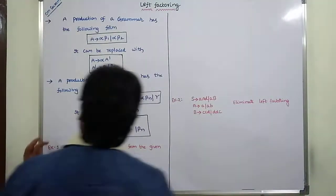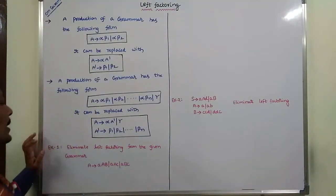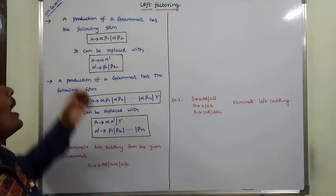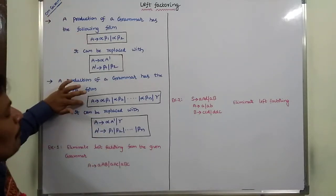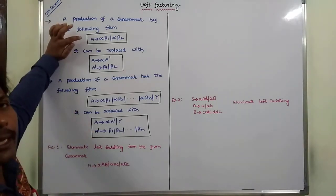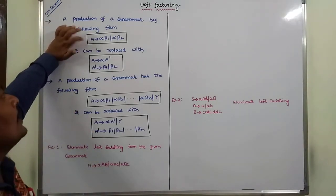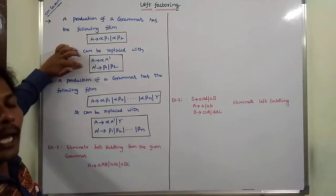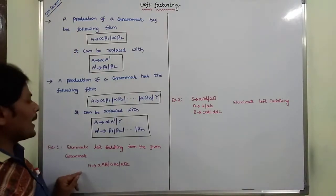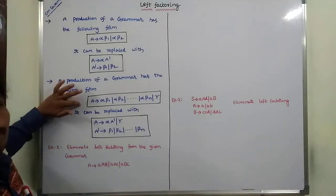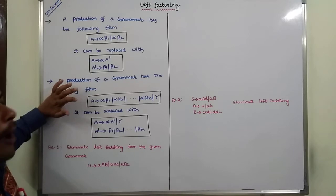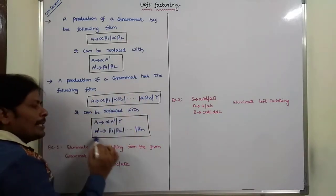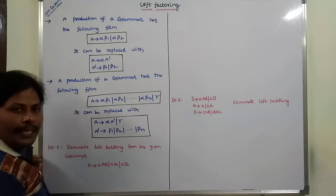Now consider the first example problem. The given grammar is compared with a production template. If the given grammar is in the form of that production, then that grammar can be replaced with two new productions for eliminating the left factoring. If it matches the template form, we replace it with two productions.